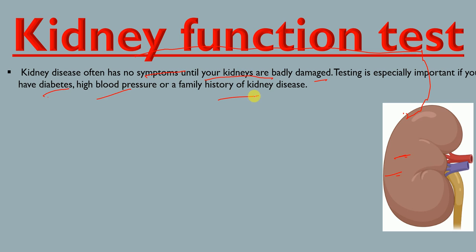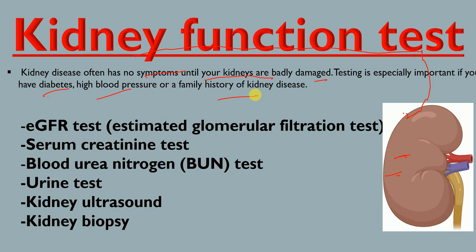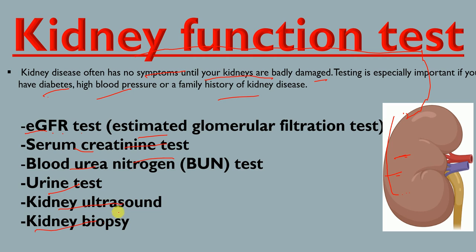There are different kinds of kidney function tests that can be performed to examine the health status of your kidney and check if your kidney has disease or not. These different kinds of tests include the eGFR test (estimated glomerular filtration test), serum creatinine test, blood urea nitrogen test, urine test, kidney ultrasound, and kidney biopsies.